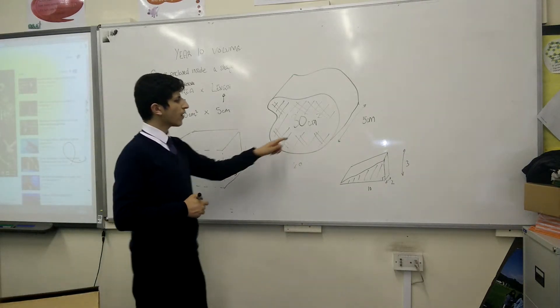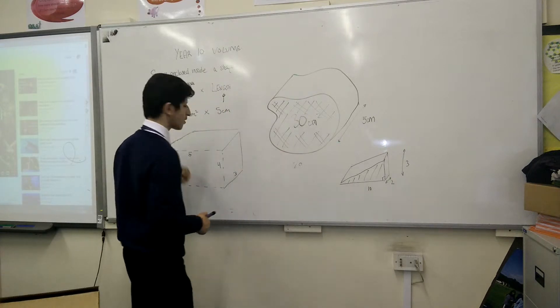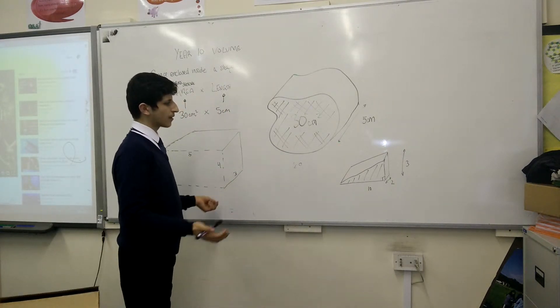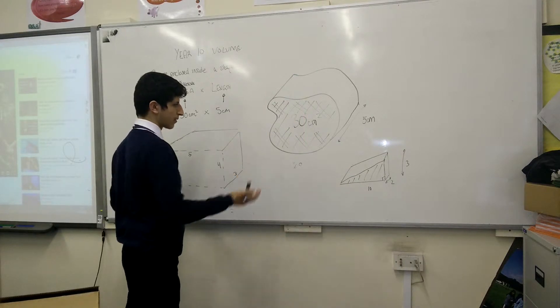However, if I had the units to be metres, then it would be metre cubed. Kilometre, kilometre cubed. Kilometre squared times kilometre will be kilometre cubed.